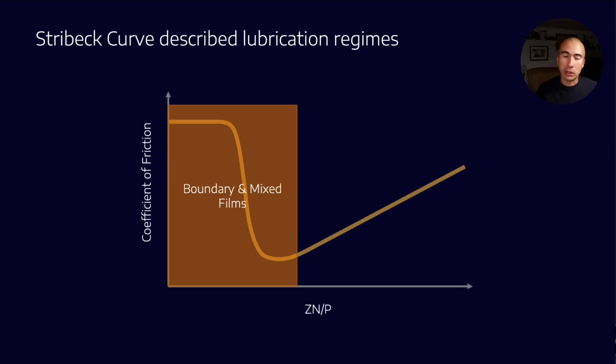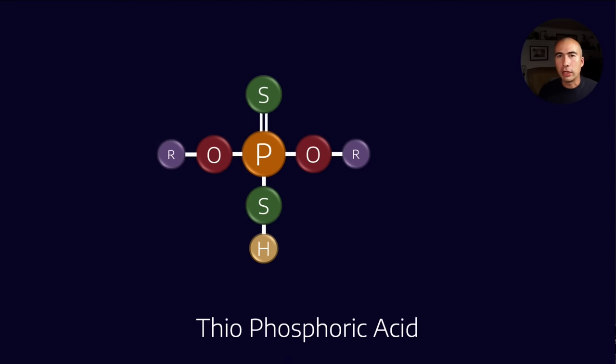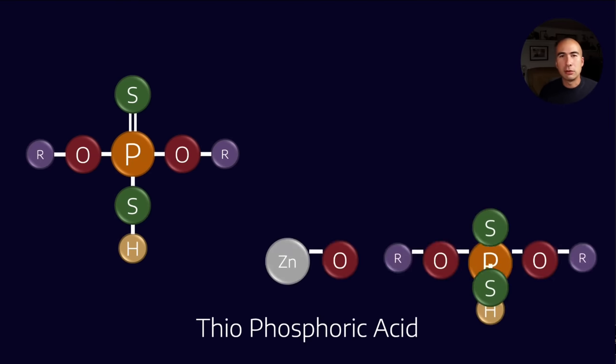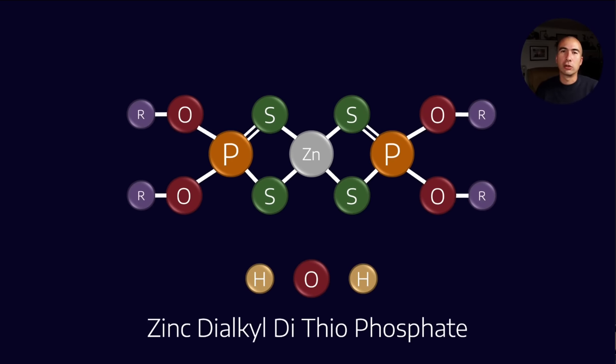And ZDDP, or sometimes called ZDTP, or zinc dialkyldithiophosphate, has been the most popular additive for a very long time. It's primarily made of two components. You mix phosphoric acid and you neutralize it with zinc oxide. This is effectively an acid-base reaction, which produces zinc dialkyldithiophosphate. You remove the water, and you're left with a simple anti-wear additive.